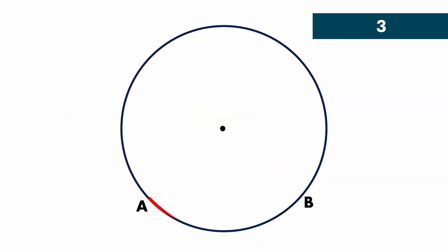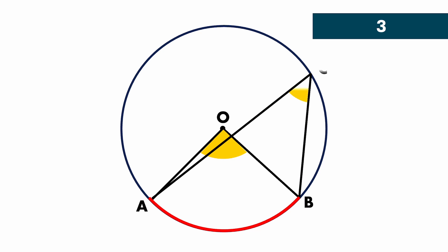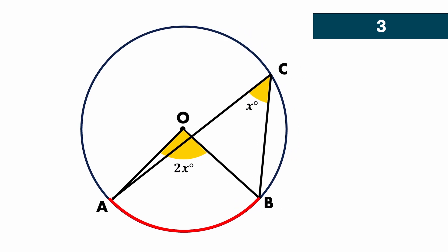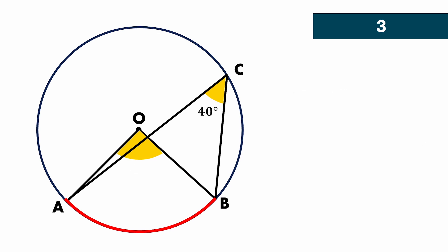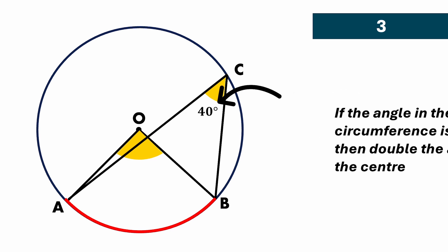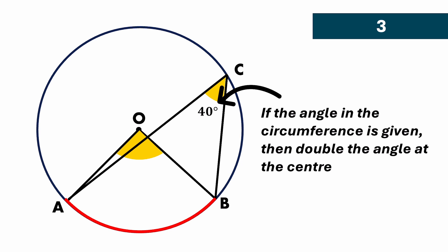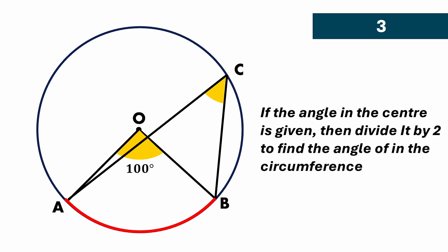Now let's discuss the third property. From arc AB, if you subtend an angle at the center — angle AOB — and another angle at the circumference — angle ACB — then if ACB equals X, angle AOB will be 2X. The angle at the center is twice the angle at the circumference. So if the circumference angle is 40 degrees, the center angle is 80 degrees. Conversely, if the center angle is 100 degrees, divide by 2 to get the circumference angle of 50 degrees.